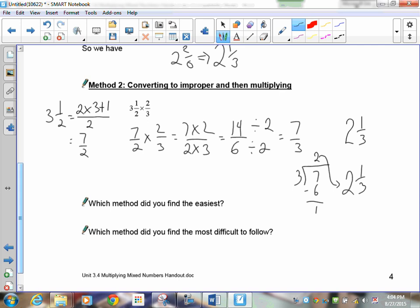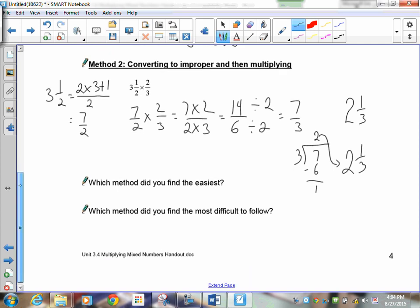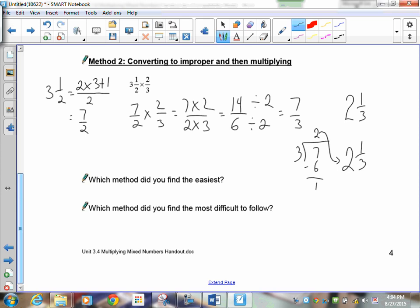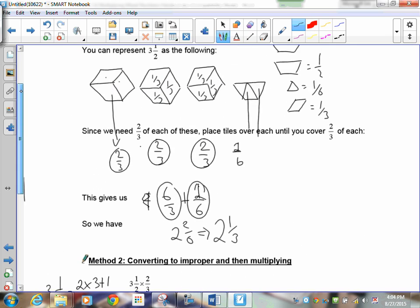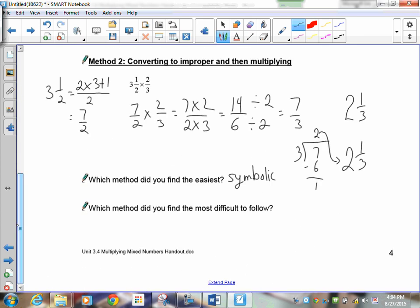Which one did you find easier? Well, if you chose the fraction block one, you're going to be doomed for disappointment because when we get into the bigger and more complicated fractions, you can't use it. So hopefully you liked the, basically, the converting method here, which is called symbolic. Hopefully you like that better. Which method did you find most difficult to follow? I probably would have guessed that you'd find the fraction blocks more difficult. But maybe not. You have your choice.